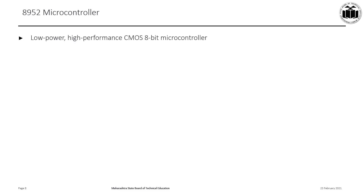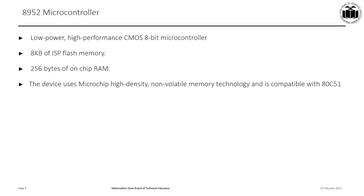The 8952 microcontroller is a low power, high performance, CMOS 8-bit microcontroller. The flash memory is double that of the 8951, so here we have 8 kilobytes of ISP flash memory. Also, the RAM is double that of 8051 — here we have 256 bytes of on-chip RAM.